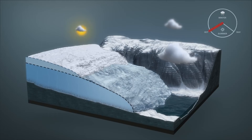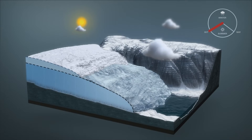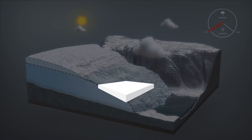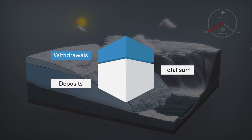A glacier growing in size. We would like to tell you how and why a glacier grows in size during certain periods and under certain climatic conditions. A glacier is like a savings bank, a system where a series of deposits and withdrawals affect the total sum.